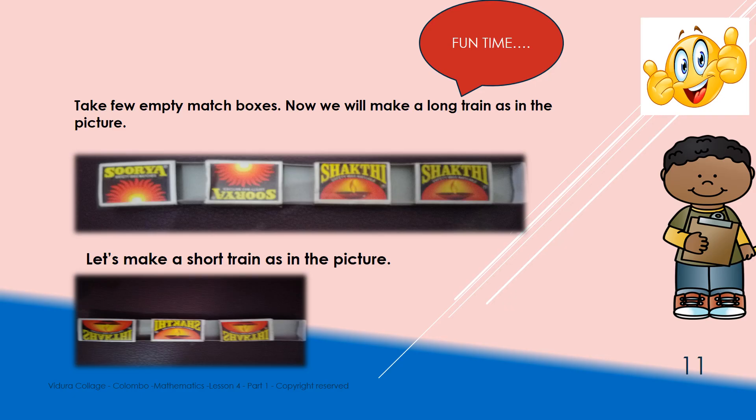Ok, now we are going to do a fun activity. For this, you should have some empty matchboxes. Please find some and get ready to do the activity. Ok, open the matchboxes like the pictures given here and attach them each other with the help of your parents. And make a long train first. Then, you can make a short train as well.